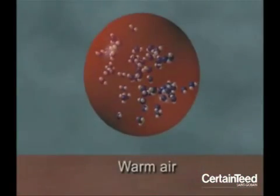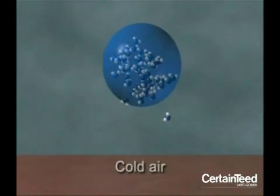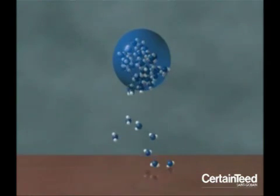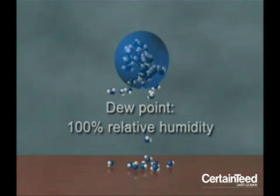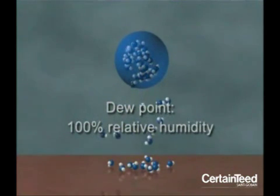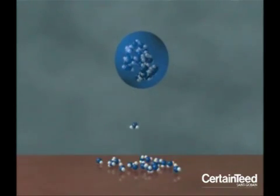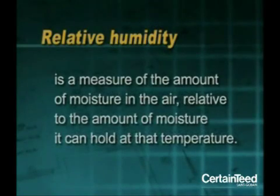We know warm air can hold more moisture than cold air. The temperature at which the moisture starts to condense is called the dew point. At the dew point, the air is completely saturated with moisture and can't hold anymore, so we call the dew point 100% relative humidity. We think of relative humidity as a measure of the amount of moisture in the air relative to the amount of moisture it can hold at that temperature.